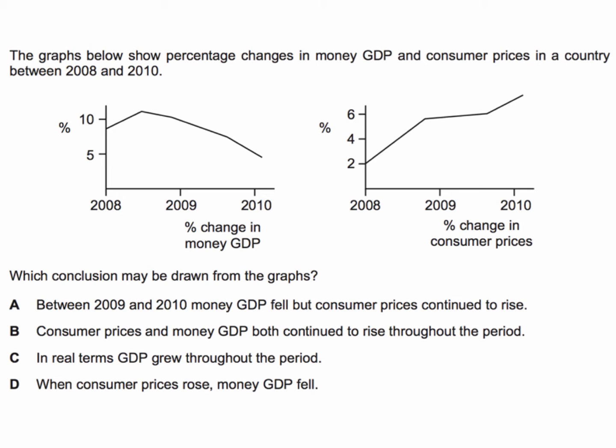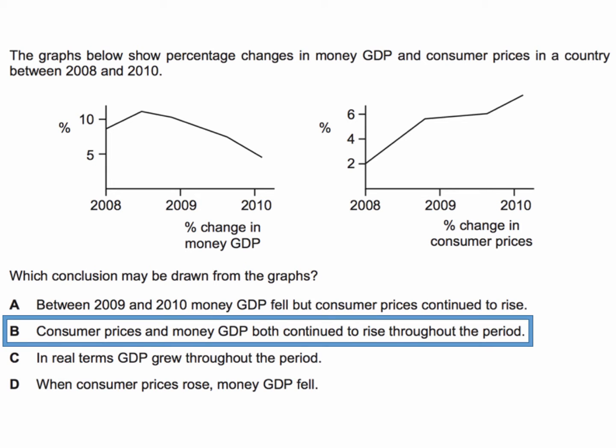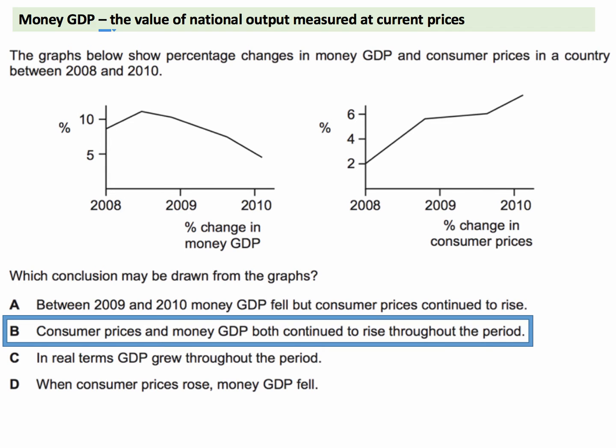The correct answer to this question is B: consumer prices and money GDP both continue to rise throughout the period. Let's look at the explanation for this.